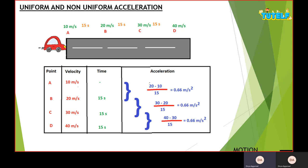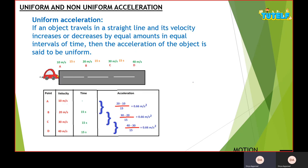In each interval, 20 is the final, 10 is the initial, and 15 is the time interval, giving acceleration of 0.66 m/s², which is constant for all. Uniform acceleration is thus defined by: first, the object must be travelling in a straight line; second, its velocity increases or decreases by equal amounts — in this case 10 m/s each time, going from 10 to 20 to 30 to 40 — in equal intervals of time of 15 seconds. All three conditions are satisfied, so the acceleration is uniform.